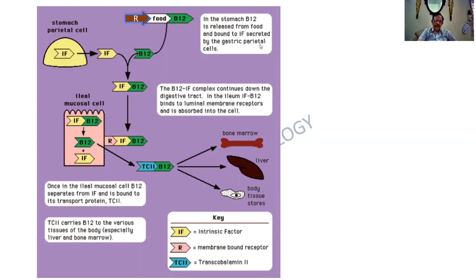Repetition is the mother of knowledge. We are repeating the flow chart. The R binder from the salivary gland gets bound to the B12 from the food. As it goes down, the R binder gets segregated and the B12 is free. Simultaneously, the intrinsic factor is being produced from the parietal cells of the stomach, and there is an intrinsic factor-B12 complex that is formed. As it goes inside the mucosal epithelium, the B12 gets separated once again and the intrinsic factor is available for re-utilization. The B12 then processes through the mucosa, combines with transcobalamin, and is deposited in various organs, particularly the liver and the bone marrow.